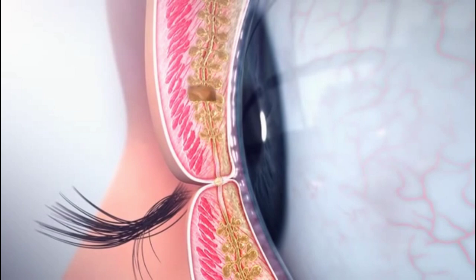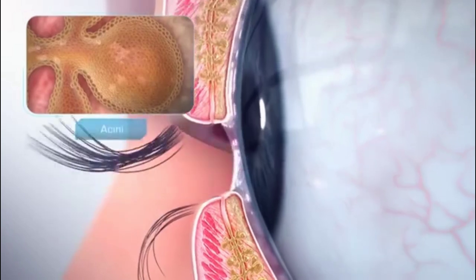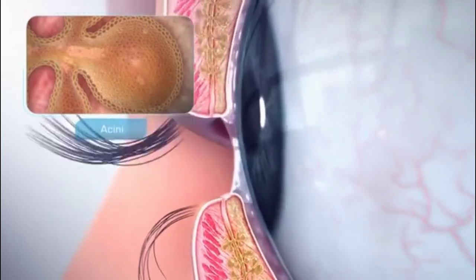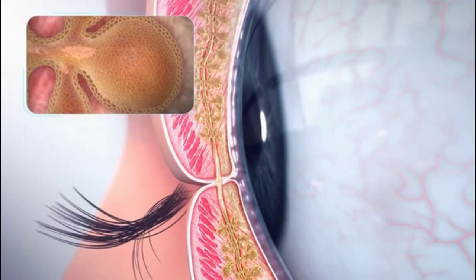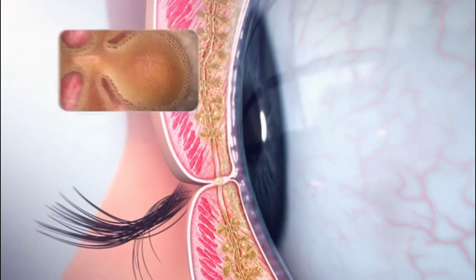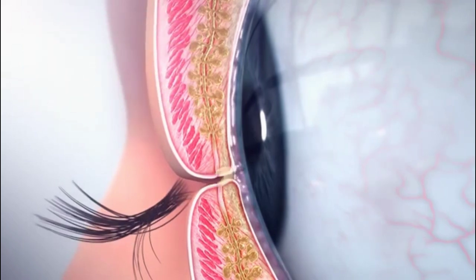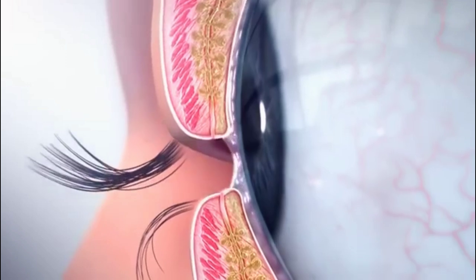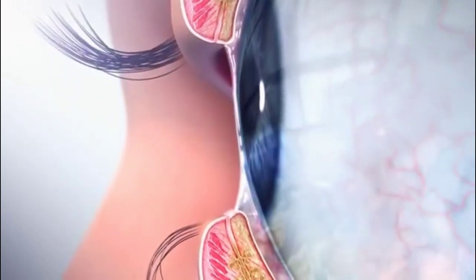Cells on the inner wall of the meibomian gland acini produce oil. In a normal eye, when you blink, the lids touch and pressure is applied to the meibomian glands, causing them to express small amounts of this oil. The upper lid then pulls the oil upward over the eye as the lid opens.